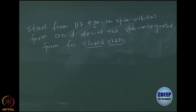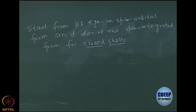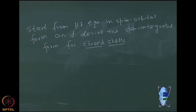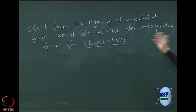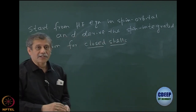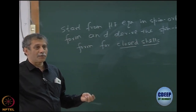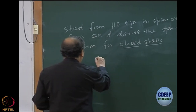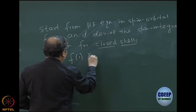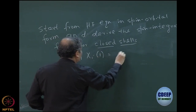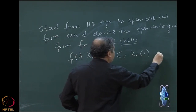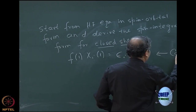We have derived the Hartree-Fock equation in spin orbital form, so we will try to see how to perform spin integration and get an equation only in terms of spatial orbitals. Remember, our Hartree-Fock equation was an eigenvalue equation of the Fock operator. This form that we derived is called the canonical Hartree-Fock equation.